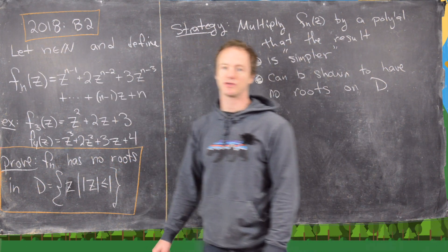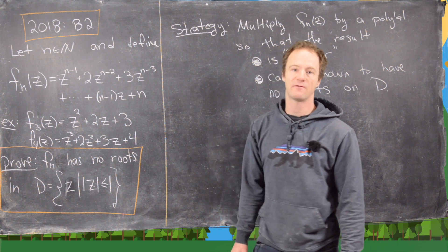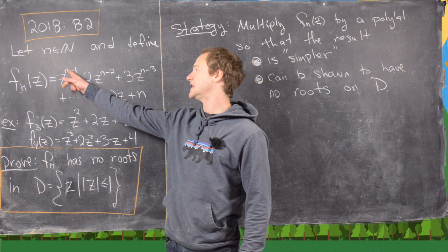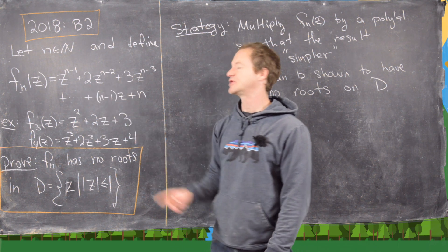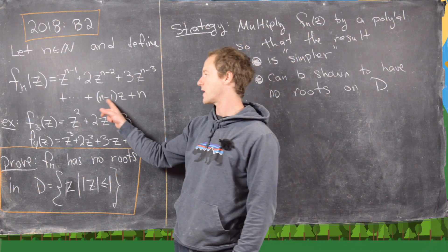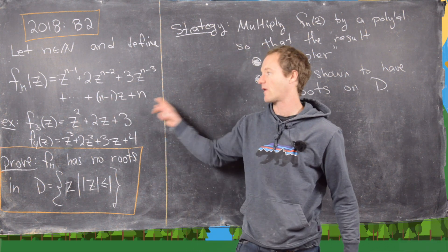We want to let n be a natural number and define the following complex polynomial: z to the n minus 1 plus 2z to the n minus 2 plus 3z to the n minus 3, all the way down to n minus 1 times z plus n.